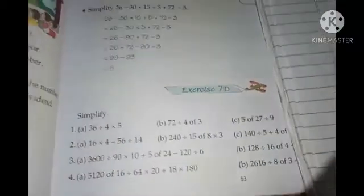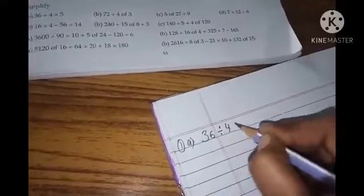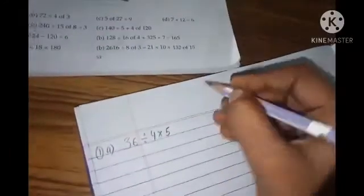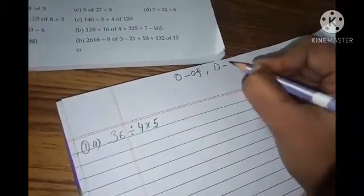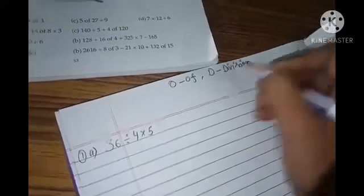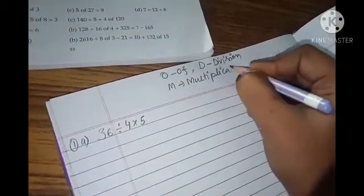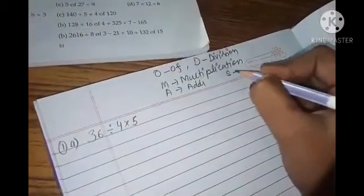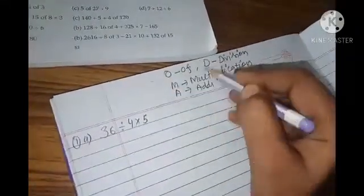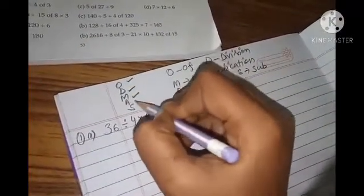So, let us do question number 1 ka first part of exercise 7D. Your first question is 36 divided by 4 multiply by 5. So, what is the pattern of doing operation? First, you have to use OFF. Then you have D. D means division. Then you have to solve M. M is multiplication. And then you have to solve what? After multiplication, we have A. A means addition. Then we have S. S means subtraction. So, ODMAS. First OFF, then division, multiplication, addition and subtraction.